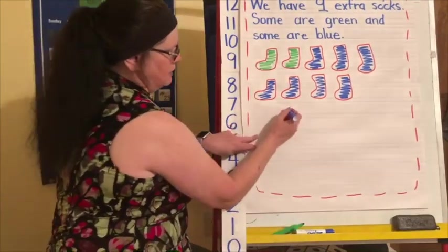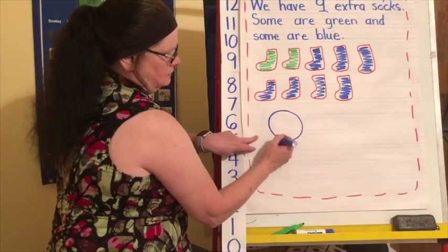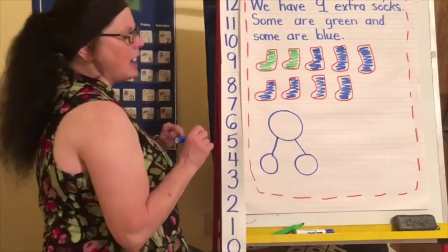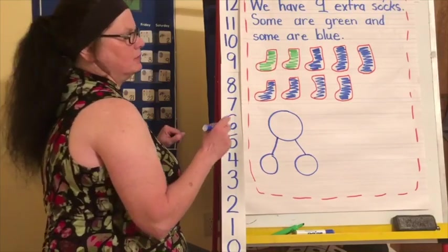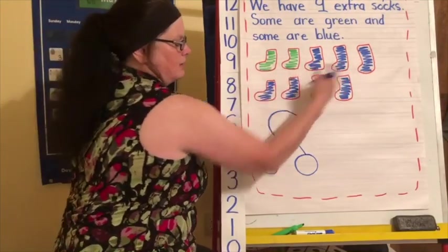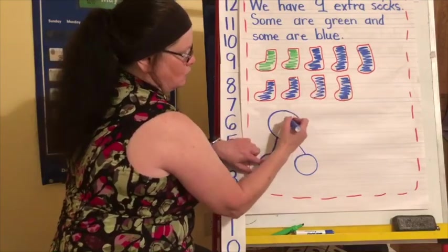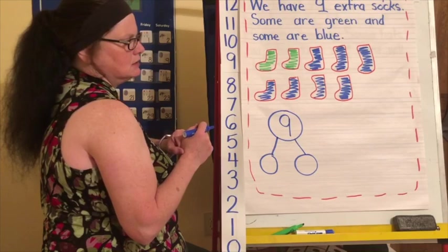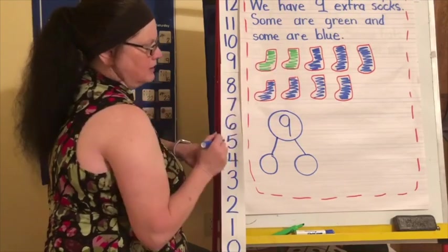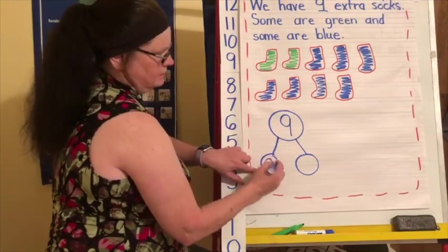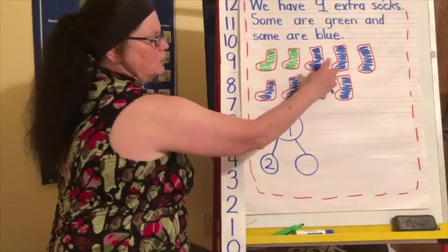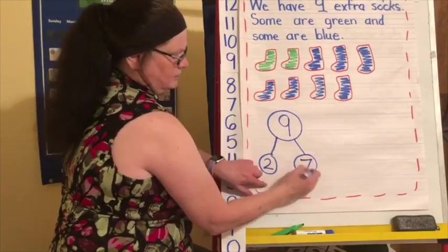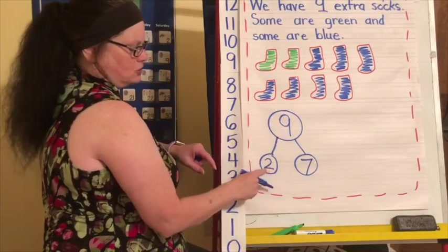All right. So the first thing I'm going to do is I'm going to make my number bond. How many did we start with? We had one, two, three, four, five, six, seven, eight, nine. We had nine. Nine is our whole. What are our parts? How many are green? And how many are blue? One, two, three, four, five, six, seven. So I had nine. My parts are two and seven.